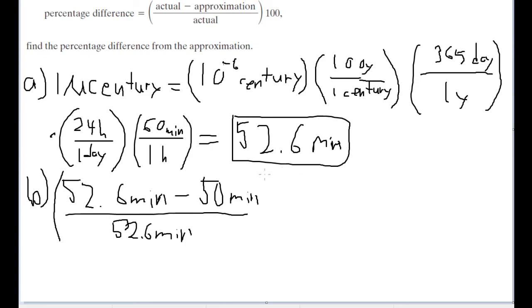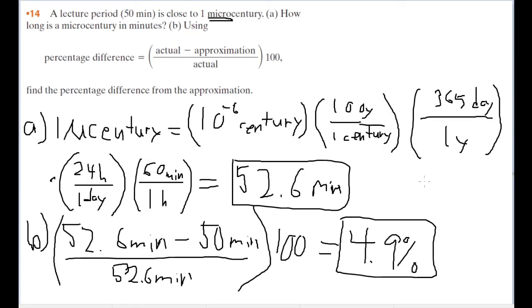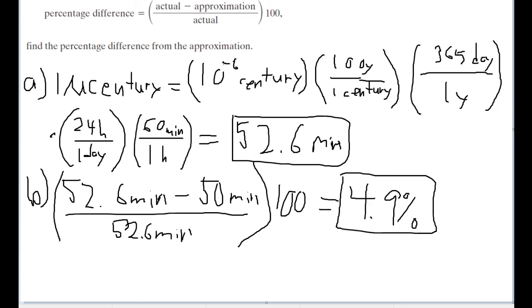And multiply the whole thing by 100 if you want. And the answer we get for that is 4.9%. So wow, that's a really good approximation. Not even a 5% error between it. Yeah, that is our answer for this lovely little problem here.